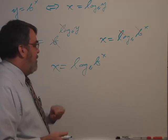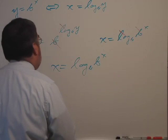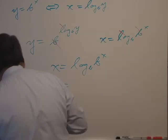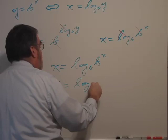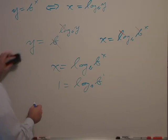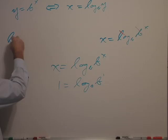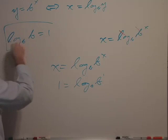But what if we decided that x was equal to 1? If x was equal to 1, then you have 1 equals to the log base b of b to the first power. Or, literally, and let me write this over here as a property.